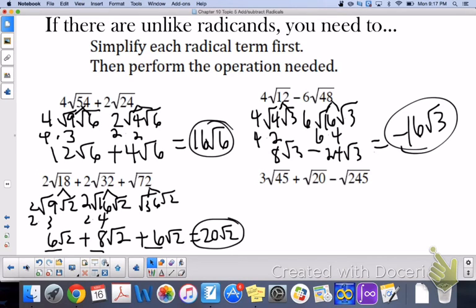So the next one, 45. The perfect square that goes into 45 is 9. So square root of 9 is 3. 3 times 3 is 9. Perfect square that goes into 20 is 4. Square root of 4 is 2. So we have plus 2 root 5.